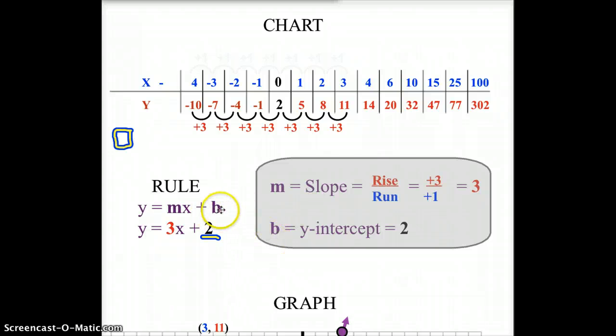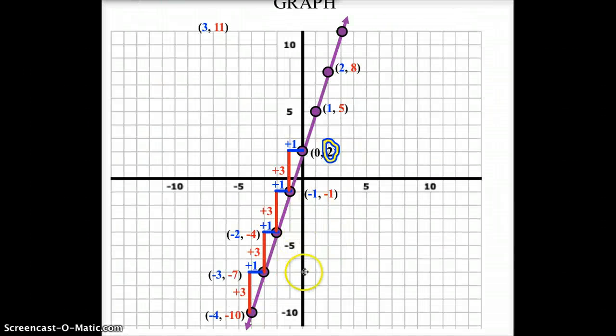Then, there's the other part, plus b. Well, b is the y-intercept. What does that mean? Well, the y-intercept, remember this center line here, is your y-axis. So, the y-intercept is where does the line cross this line. As you can see in this case, it's right here.